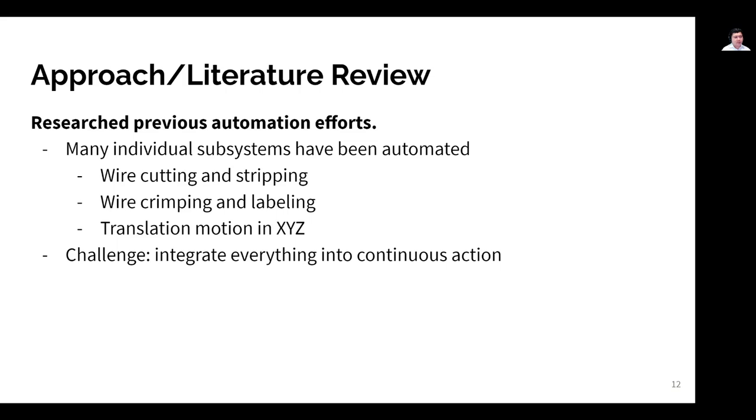On the way to designing this machine, the team conducted several comprehensive literature reviews, both to determine the feasibility of and to investigate the methods of wire harness assembly automation. We discovered that many of the individual tasks that we were pursuing have already been automated and have quite established automation methods, including the cutting and stripping, crimping and labeling steps, as well as the CNC translation stage in three axes. Our challenge was then to integrate all of these devices into one machine that could perform all these steps continuously.